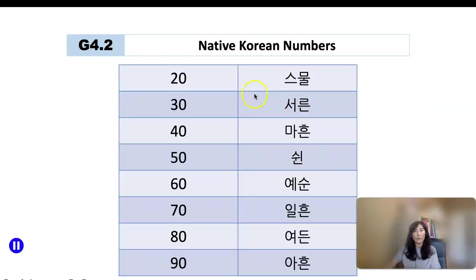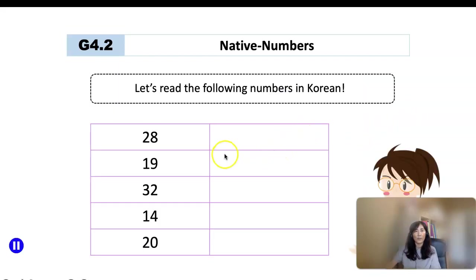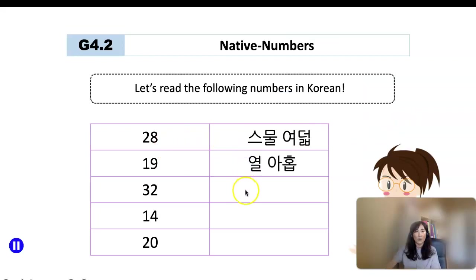A quick note: native Korean numbers only go up to 99. Number 20 is 스물, 30 is 서른, 40 is 마흔, 50 is 쉰. For example, 28 is 스물여덟, 19 is 열아홉, 32 is 서른둘, 16 is 열여섯, and 20 is 스물. That's it for today. Thank you.